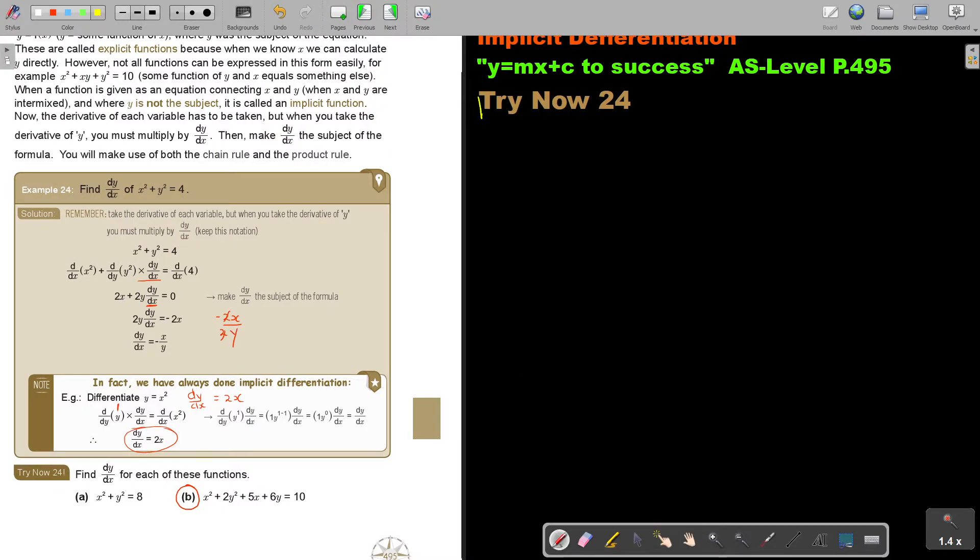I'm first going to write it over. It's going to be x squared plus 2y squared plus 5x plus 6y and that's equal to 10. Now, remember, I take every term, the derivative. If it's in terms of x, then I say d over dx. And then there's my term.